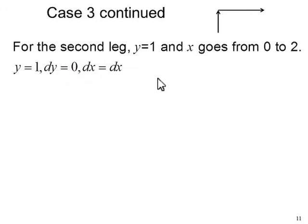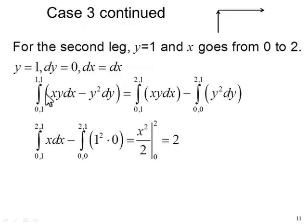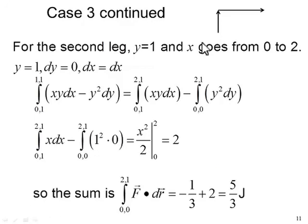Now we worry about the second stage in the path. For the second leg, y is equal to 1 and x goes from 0 to 2. So y is equal to 1. Because y doesn't change, dy is 0. And dx is just dx. I can't relate dx to dy because dy is equal to 0. That's the full integral with x and y. We can start by making our substitutions. y is equal to 1. That simplifies this to x*dx. And over here, y is equal to 1. But dy is equal to 0. So this integration is 0. That integral can be done. So the sum of the two legs, this one plus this one, turns out then to be plus 5/3 joules.